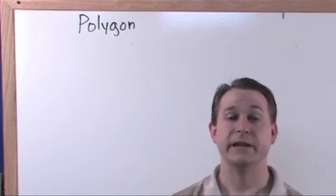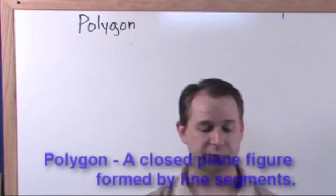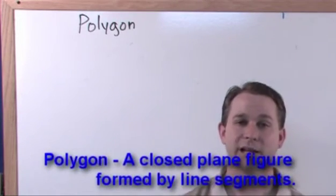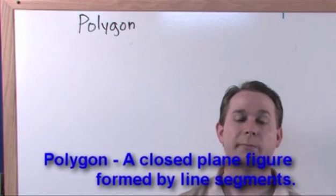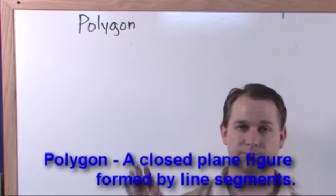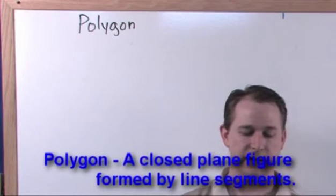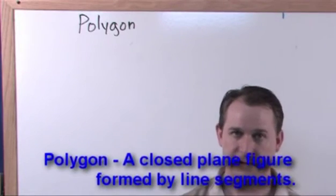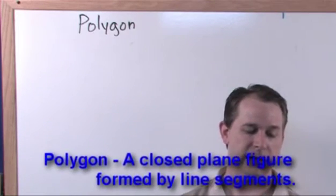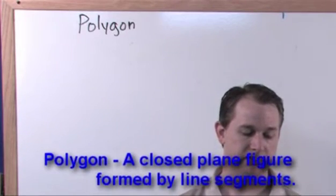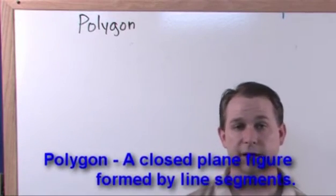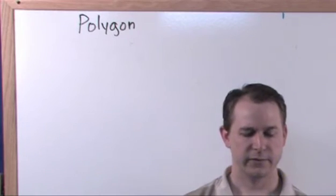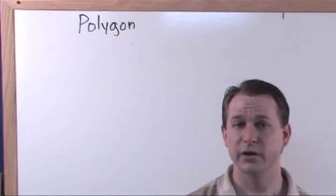So the definition of a polygon, you can see it up on your screen, it's a closed plane figure formed by line segments. We'll draw pictures and I'll show you what that means. The line segments or the sides of the polygon intersect only at their end points and there are no curved sides in a polygon.